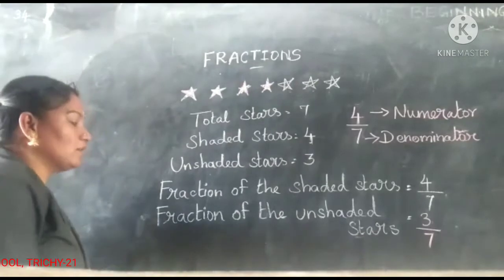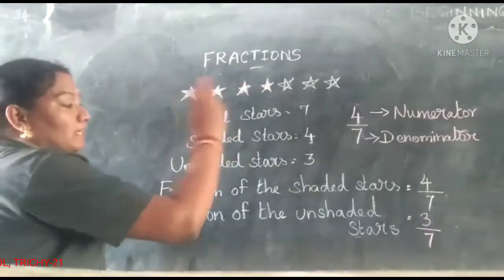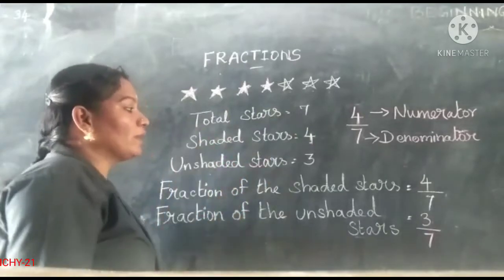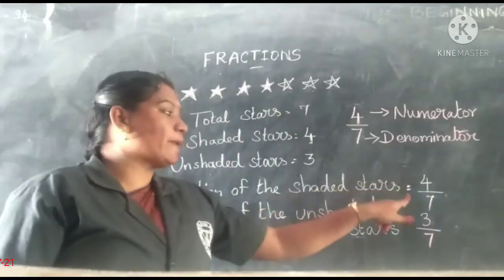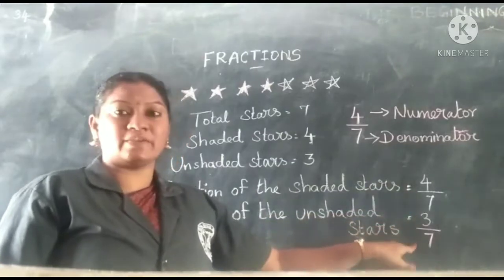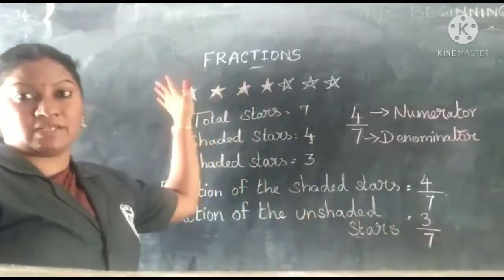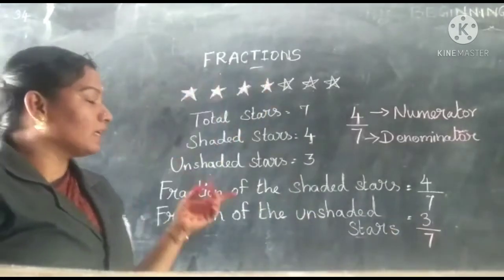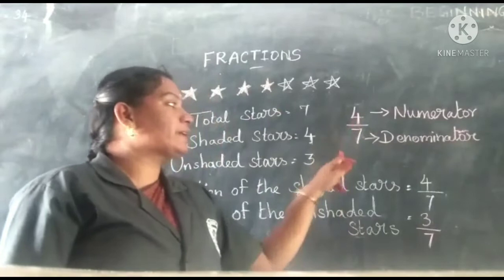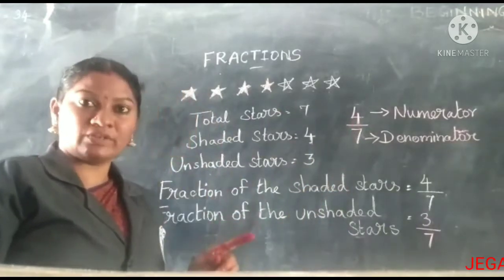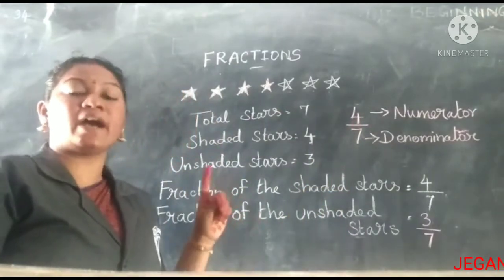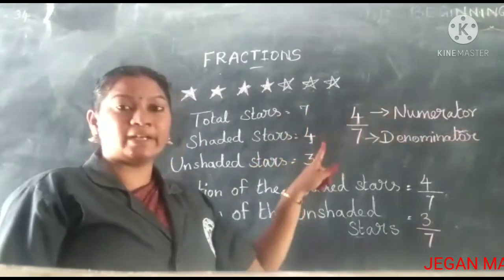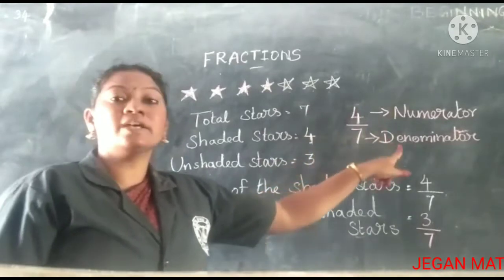Clear? So the shadowed part is 4 by 7 and unshadowed is 3 by 7, made from the 7 stars. Second recall point: numerator and denominator. In the fraction 4 by 7, 4 is the numerator and 7 is the denominator.